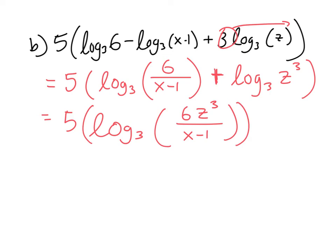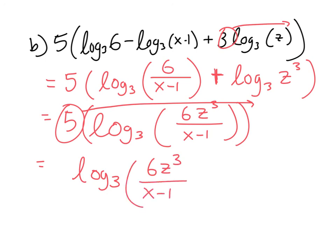Last step is to bring this up. So then this becomes log base 3 of 6z³ over x minus 1, all of this to the fifth power. And there you go. So that is in condensed form.